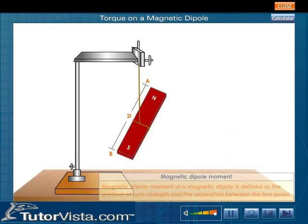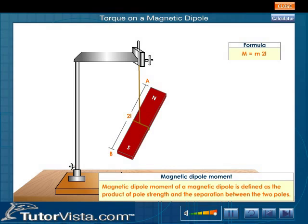Magnetic Dipole Moment of a Magnetic Dipole is defined as the product of pole strength and the separation between the two poles. Magnetic Dipole Moment is denoted by Vector M or Vector PM and it is a vector quantity. Its direction is always from South Pole to North Pole of the Dipole.